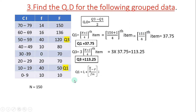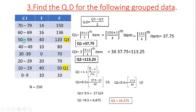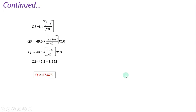Substituting values for Q1: L is 9.5, N/4 is 37.75, F (cumulative frequency before the class) is 10, Fm (frequency of the class) is 40, and I is 10. Simplifying gives the exact value of Q1 = 16.375. Similarly, for Q3: L is 49.5, substituting all values gives Q3 = 57.65.